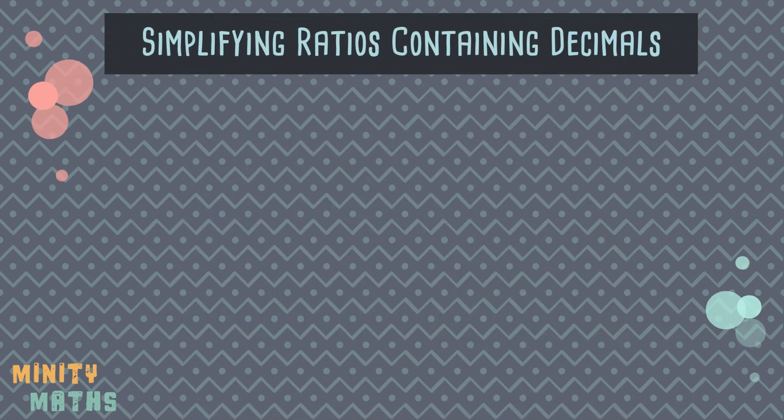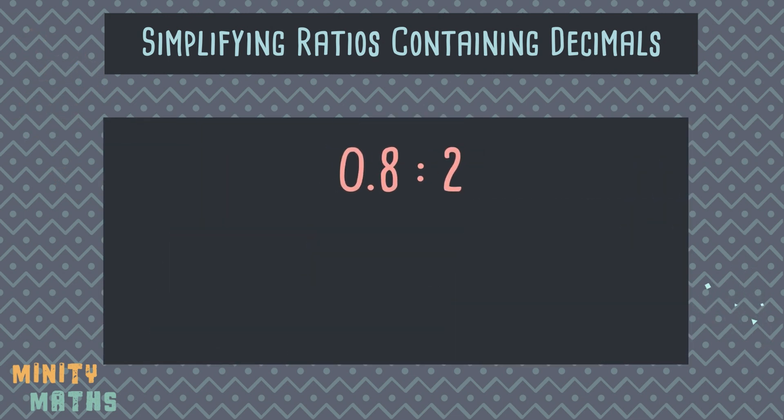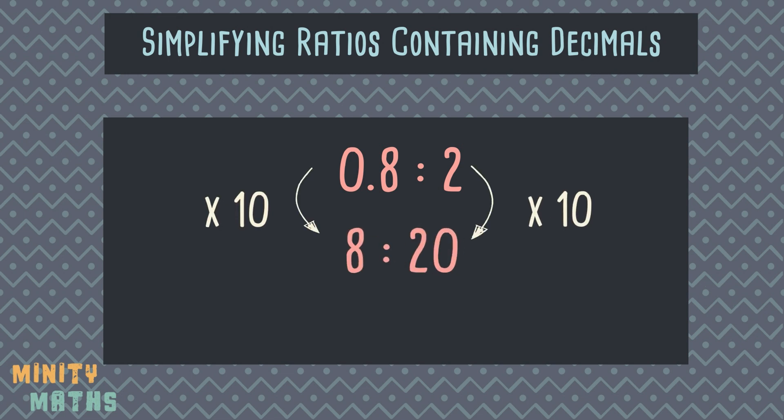Now, what if we have a ratio containing some decimal numbers? How can we simplify this and make it easier to read? Firstly, we can get rid of the decimal by multiplying both sides by a multiple of 10. In this case, we can multiply both numbers by 10 to turn 0.8 into a whole number. Remember that whatever we do to one part of the ratio, we must do to all parts. So we also multiply 2 by 10 to get 20. We now have a ratio of 8 to 20, but this isn't in its simplest form. So we simplify by dividing both parts by the highest common factor of 4, giving us a ratio of 2 to 5. This simplified ratio is much easier to read, compare, and visualize than the initial ratio of 0.8 to 2.